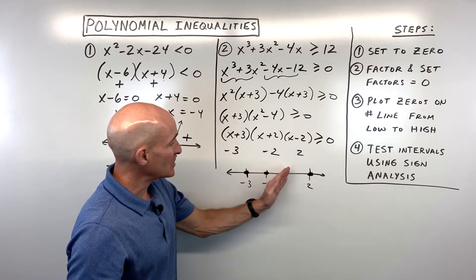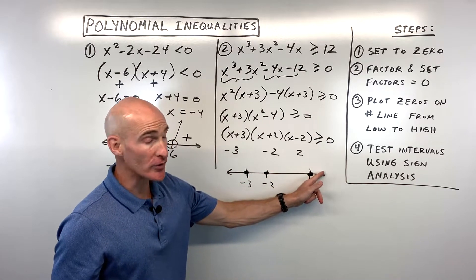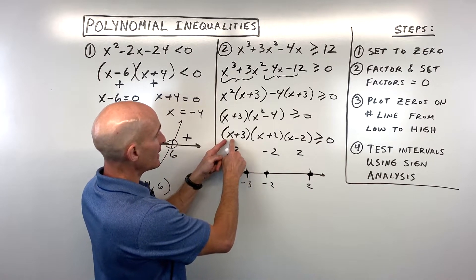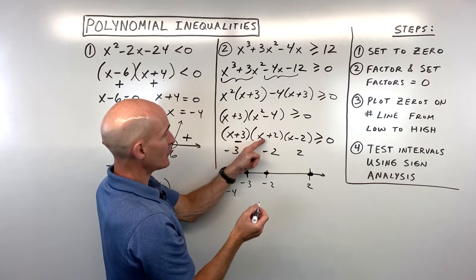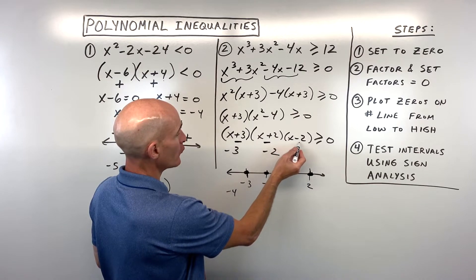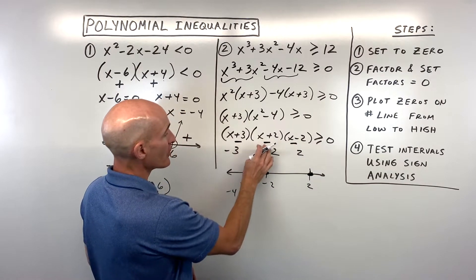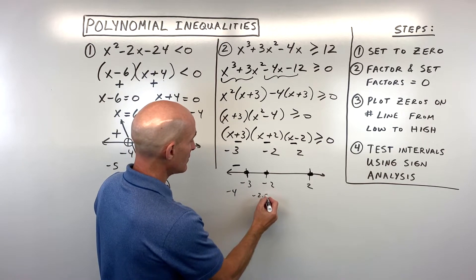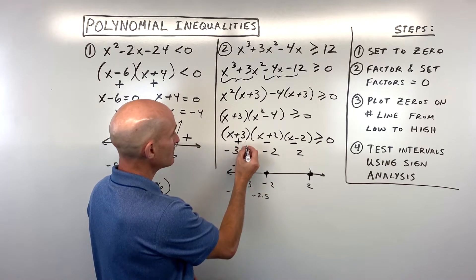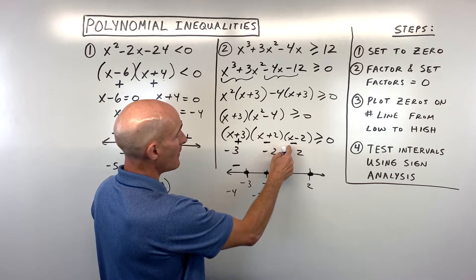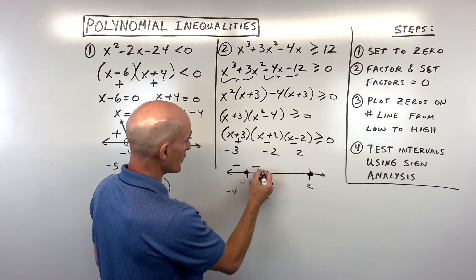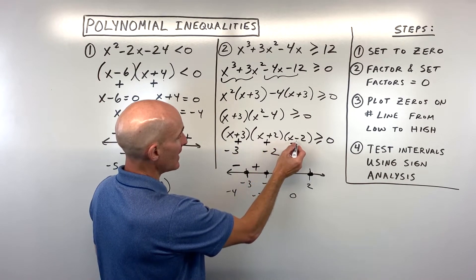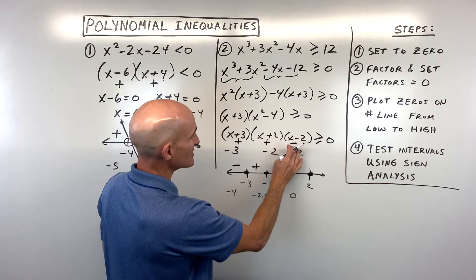Testing negative 4: negative 4 plus 3 is negative 1 (negative), negative 4 plus 2 is negative 2 (negative), negative 4 minus 2 is negative 6 (negative). Three negatives multiplied give a negative. Testing negative 2.5: that gives positive times negative times negative, so two negatives cancel — result is positive. Testing 0: positive 3 times positive 2 times negative 2 — positive times positive times negative is negative.